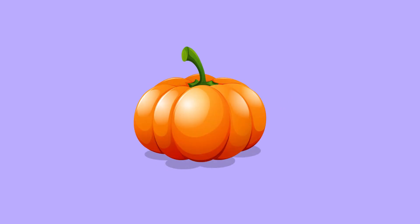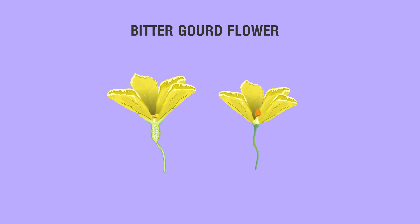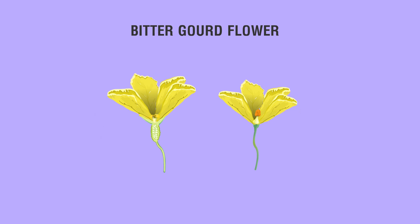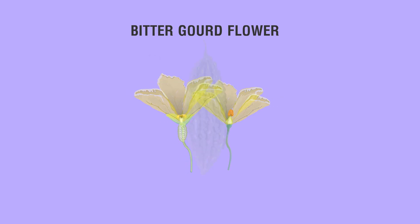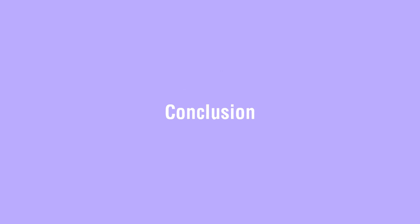After fertilization, the ovary develops to become fruit. Bitter Gourd Flower: The male flower contains anther and filament. The female flower contains stigma, style, and ovary. Both the male and female flowers consist of five petals and five sepals. Later, the ovaries develop into fruit.